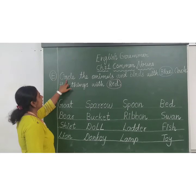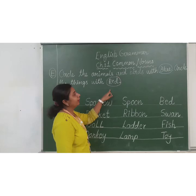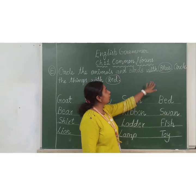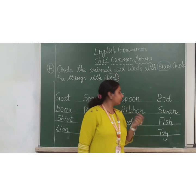Exercise E: Circle the animals and birds with blue. Circle the things with red. Students, aapko is exercise mein blue aur red crayons ka use karna hai. Jisko aapko blue color se animals aur birds ko circle karna hai, aur red color se aapko things ko circle karna hai. So let's start.